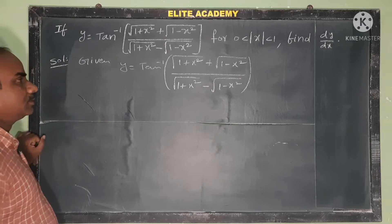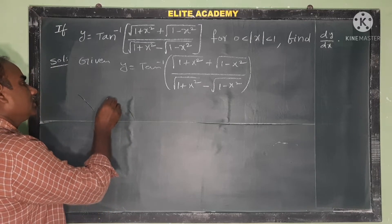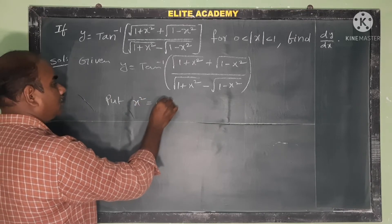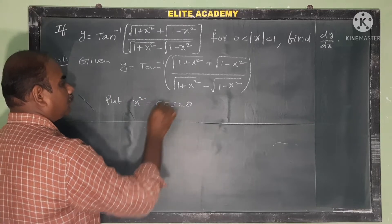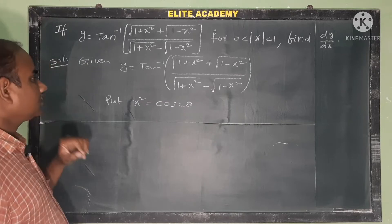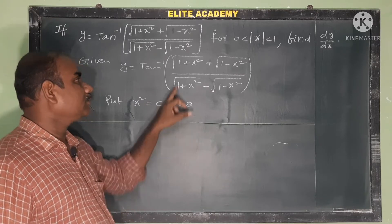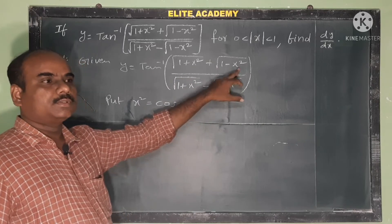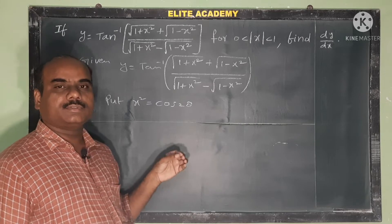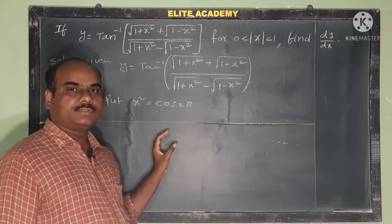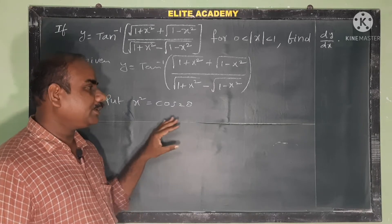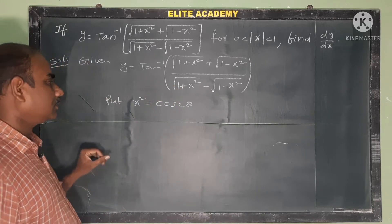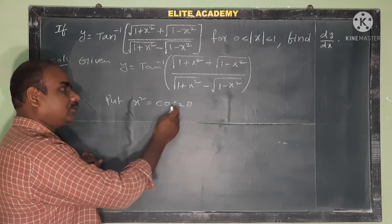This is the substitution method. We put x square equal to cos 2 theta. From trigonometry: 1 plus cos 2 theta equals 2 cos square theta, and 1 minus cos 2 theta equals 2 sin square theta. We use these to simplify the roots. So x square is equal to cos 2 theta.